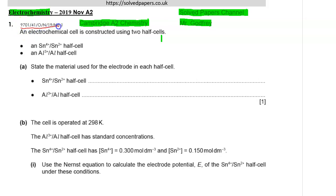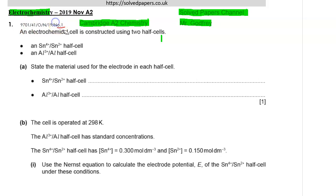You can use this to refer to the past paper or the mark scheme. This is Paper 4-1 and this question was question number one in the October/November 2019 exam series. 9701 is the exam code for A-level Chemistry Cambridge. Let's get started.